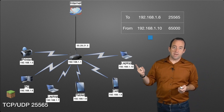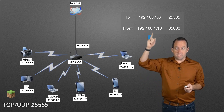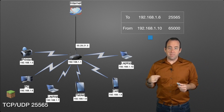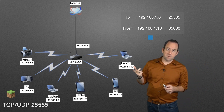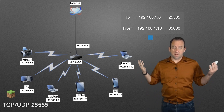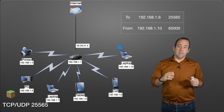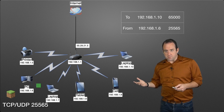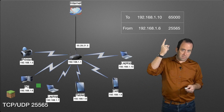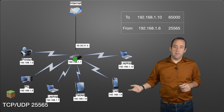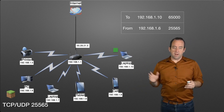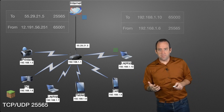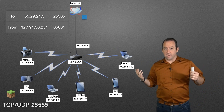Now let's look at accessing that Minecraft server from a computer on the same local network. A packet is sent to 192.168.1.6 — the server's IP — on port 25565, from this device at 192.168.1.10 on port 65000 (from the dynamic range). That packet goes from the computer to the switch to the server. The server receives it, sends back a response, and it gets back to the computer. Everyone's happy — we're all inside the private network, so no port forwarding is needed.